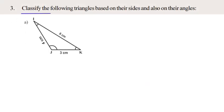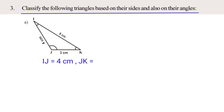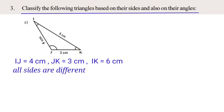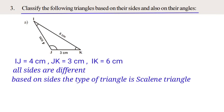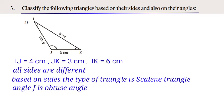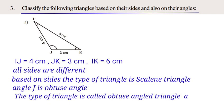Classify the following triangles based on their sides and also their angles. Problem 3A: Triangle IJK — side IJ is equal to 4 cm, side JK is equal to 3 cm, side IK is equal to 6 cm. All sides are different, so based on sides it is a Scalene Triangle. Angle J is an Obtuse Angle, so based on angles it is an Obtuse Angle Triangle.